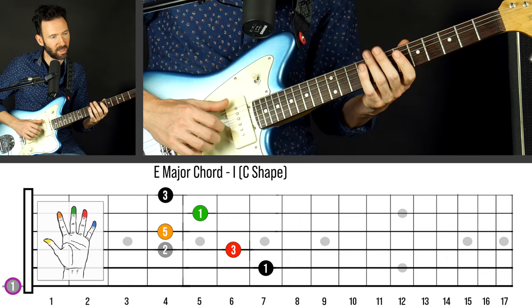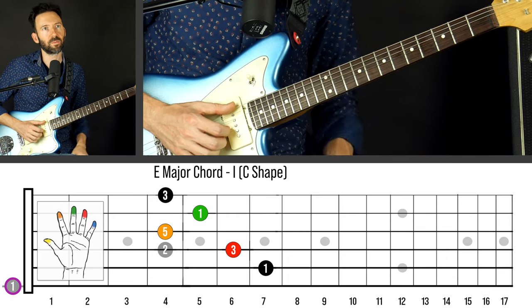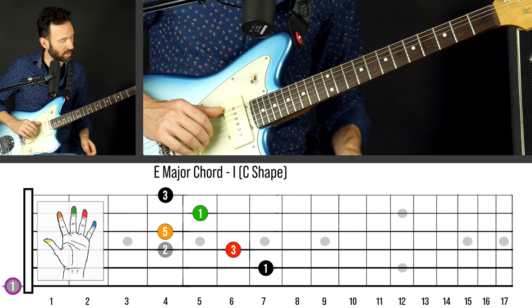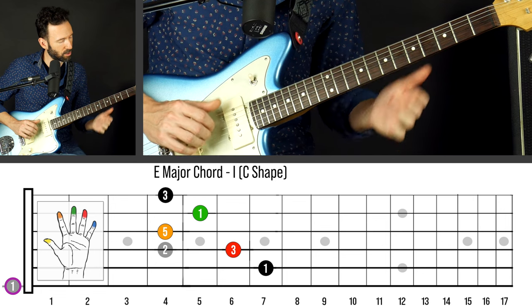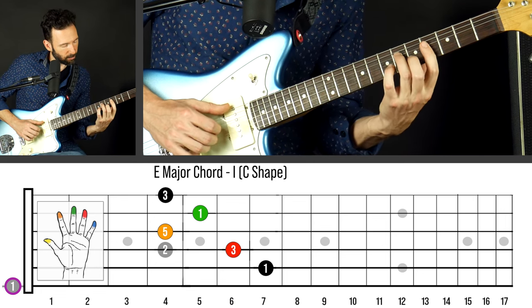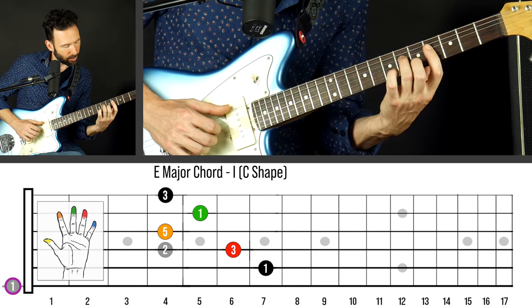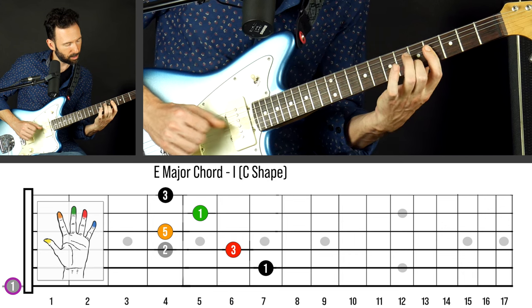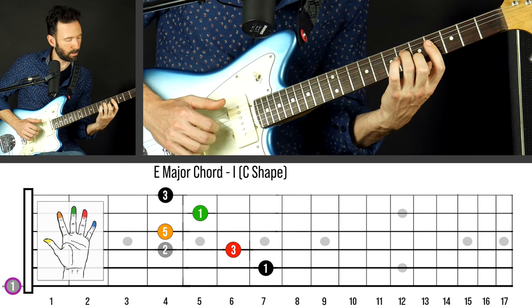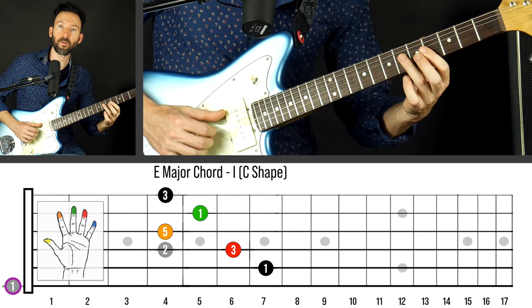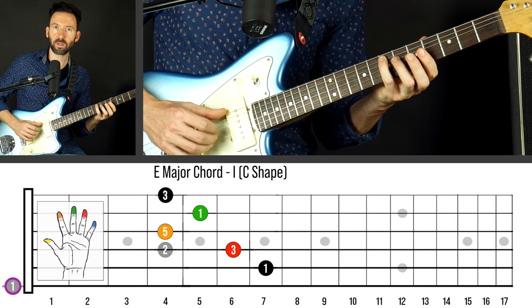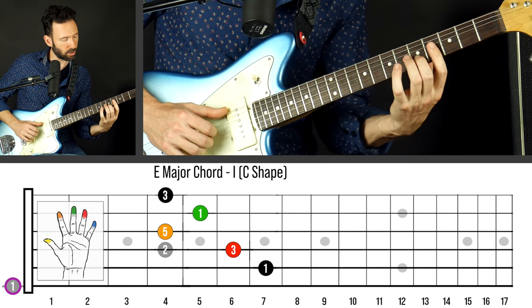Key of E - E-flat was probably Hendrix's favorite key because you've got that open E string, but we're in standard tuning, key of E. We're just going to hammer into that shape, starting on the third. We don't need this root because we have the low E string root.